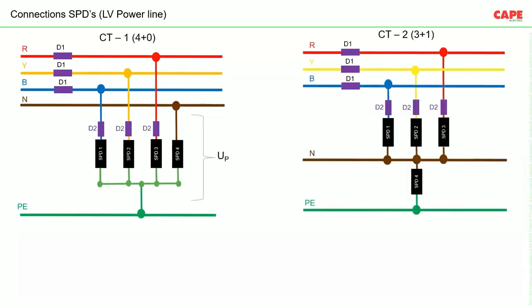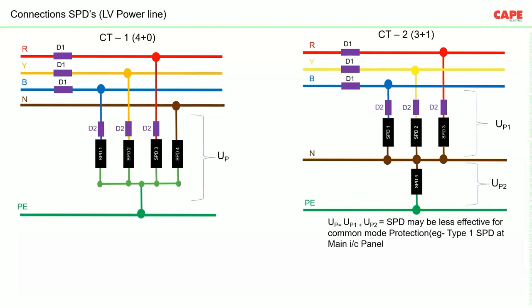In connection type 1 (4+0), the voltage protection level of the complete system equals the voltage protection level of each individual SPD. In connection type 2 (3+1), the effective voltage protection level is the sum of the voltage drop across SPD1, SPD2, or SPD3 plus the voltage drop across SPD4.